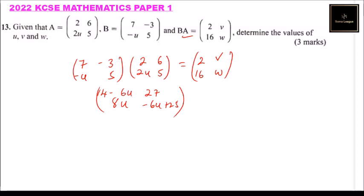So this is equals to 2, v, 16, w. So from here we can see in a matrix, we say if two matrices are equal, then the corresponding elements of the matrix are equal.